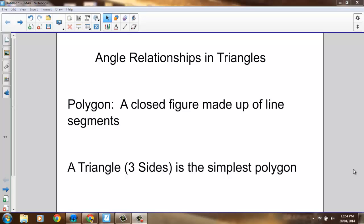Our first definition is a polygon. A polygon is a type of shape, a closed figure made up of line segments. A triangle, which has three sides, is the simplest kind of polygon.